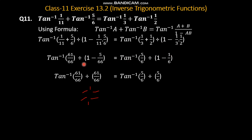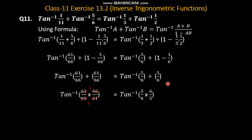Simplify करते हैं: tan inverse 61 over 66 divided by 66 minus 5, करेंगे तो 61 over 66 आजएगा। Right hand side पे 5 by 6 और 6 minus 1 जगा 5 by 6. Sign of division को खतम करके sign of multiplication लगाएं। यह देखें 61, 61 से और 66, 66 से cancel हो गया। Similarly right hand side पे 5 by 6 और 6 by 5 यह भी आपस में cancel हो गया।